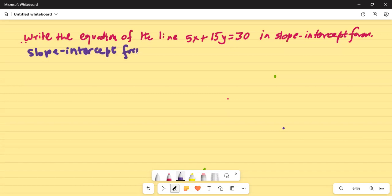Slope-intercept form is y equals mx plus b, where m is the slope and b is the intercept.